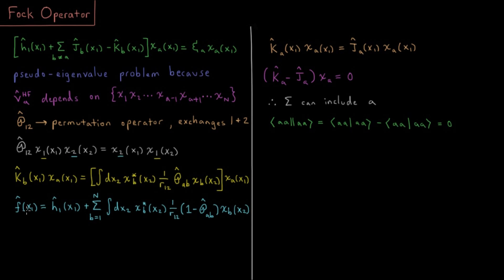We can now reformat our Fock operator as: the one-electron terms (kinetic energy plus nuclear attractions), plus a sum over all orbitals B equals one to N — notably without the restriction that B not equal A. We integrate over all of electron two's coordinates of chi-star-B, one over R12, and chi-B, then apply (one minus P_AB). The factor of one gives the Coulomb part, and minus P_AB gives the negative exchange part — a simpler form that doesn't require a restricted sum.